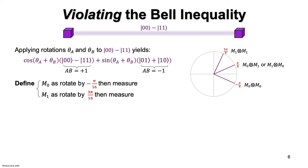Let's look at the various angles that arise. When M zero is performed on both sides, the total rotation angle is minus pi over 8. When M zero is performed on one side and M one on the other side, the total rotation angle is plus pi over 8. And when M one is performed on both sides, the total rotation angle is 3 pi over 8.